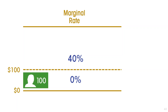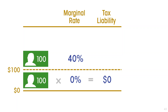So if you earn $100 a year, then your tax liability is zero. But if, for example, your annual income is $200, then the portion above $100 is taxed at a marginal rate of 40%, and so you would owe $40 on that second $100.